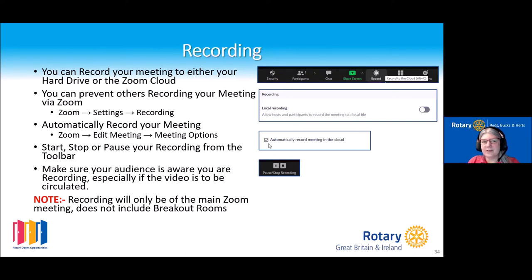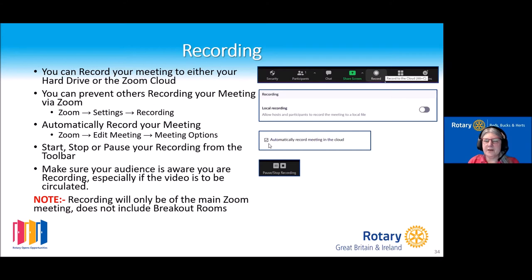How do you record your meeting? You can set this up to record either to your hard drive or to your Zoom cloud — I would recommend the Zoom cloud. You can prevent other people from recording by making sure the local recordings option is off, which you may want if a speaker doesn't want you sharing their recording. When you set up your meeting, you have an option to automatically record. I have it on — I'd rather record every meeting and not use it than the other way around. From the toolbar you can pause, start, or stop your recording. The recording is only of your main Zoom room and will not include any breakout rooms.